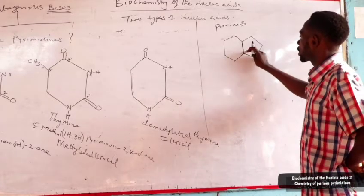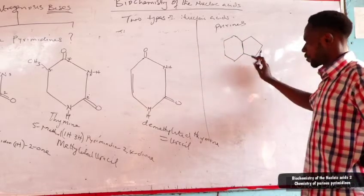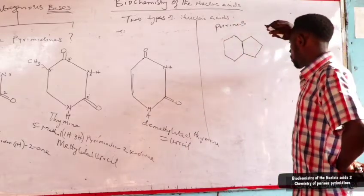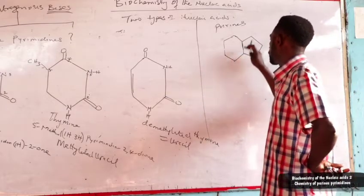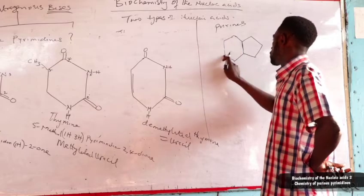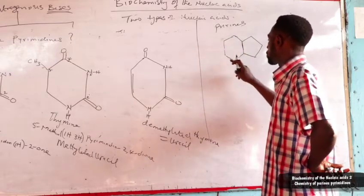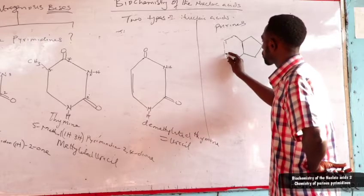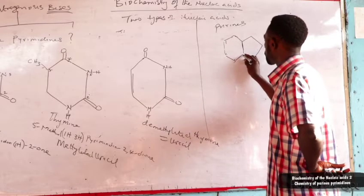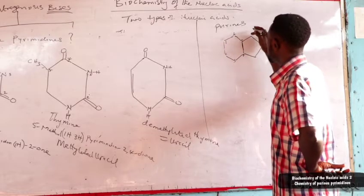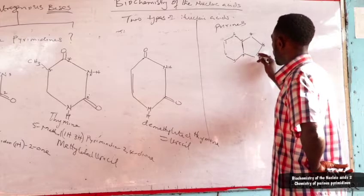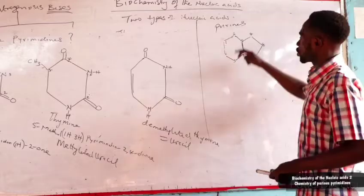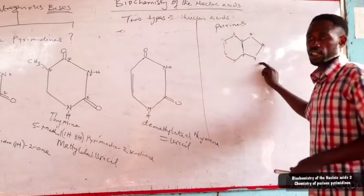The purine ring has six sides on one ring and five sides on the other — a five-sided ring and a six-sided ring joined together form purine. In conventional numbering, the positions are labeled one through nine. Position one, two, three, four, five, six for the six-membered ring, then seven, eight, and nine for the five-membered ring. So purine has nine members total.